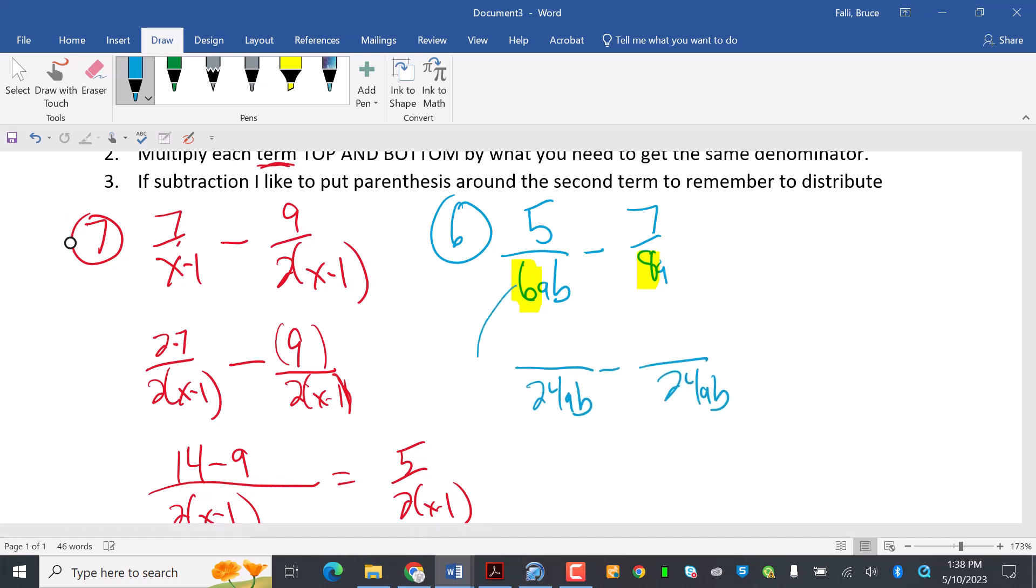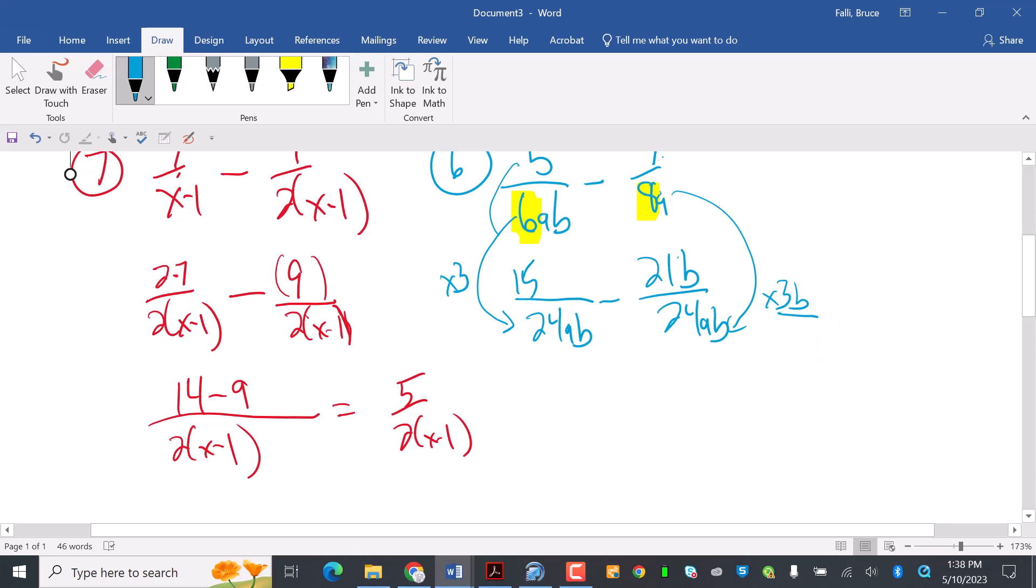So to get 24 down here, I had to multiply times three. So five times three is 15. And then this is ab, and that's fine. On this part, I had to multiply it times three and times b. I need to get the b part here. So this means it's going to be 7 times 3 is 21b, because I had to multiply by the three and the b. So then I'm going to write it, and I'm going to have 15 minus 21b all over 24ab.